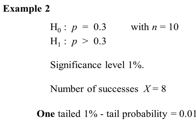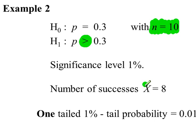Example 2: H1 is p greater than 0.3. This time we have a sample of 10 in which there were 8 successes. And because H1 says more than 0.3, we're going to work out P(x ≥ 8).